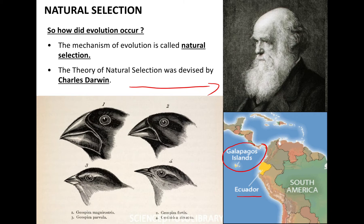Charles Darwin was born in the early 1800s and he was a naturalist who devoted much of his life to scientific research. As part of his research, he spent five years as a ship's naturalist on the HMS Beagle as it travelled to South America.